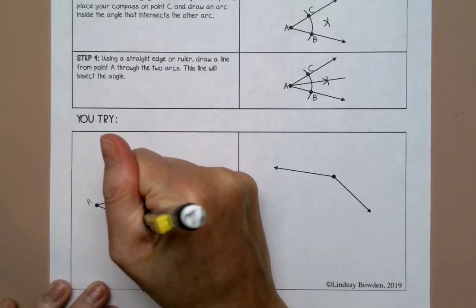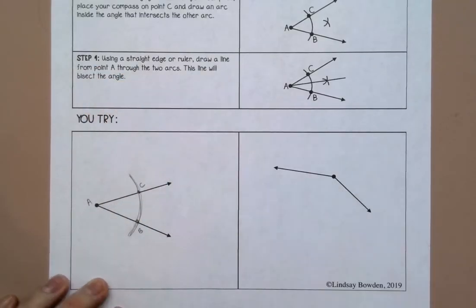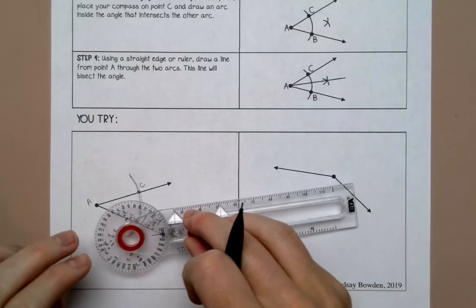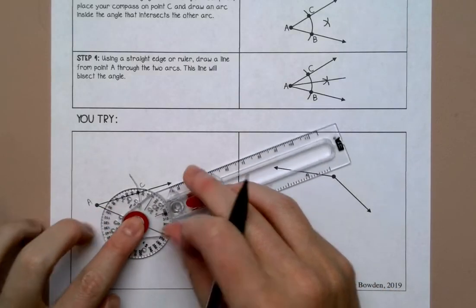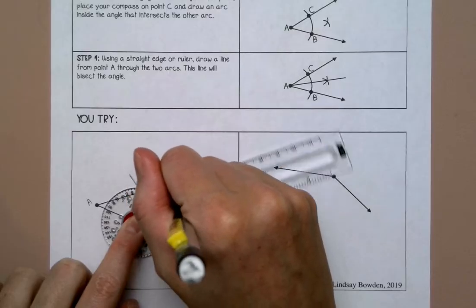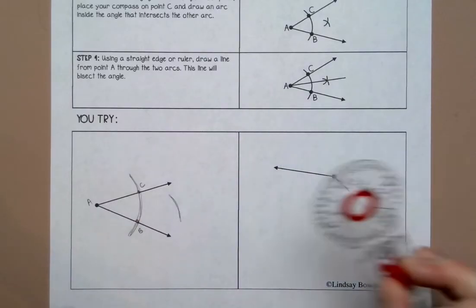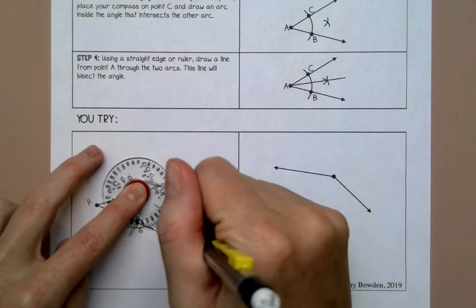I'm going to label this one B and this one C. Then without changing the width I'm going to put my compass on B and draw an arc in the middle of the angle and then I'm going to do the same thing from C in the middle of the angle